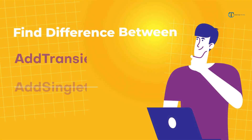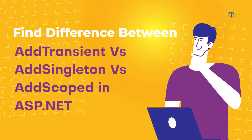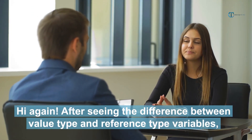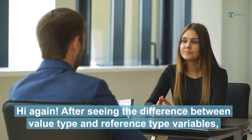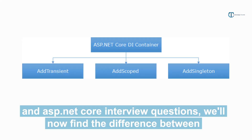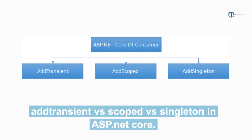Find the difference between add transient, add singleton, and add scoped in ASP.NET Core. Hi again. After seeing the difference between value type and reference type variables and ASP.NET Core interview questions, we'll now find the difference between add transient, scoped, and singleton in ASP.NET Core.